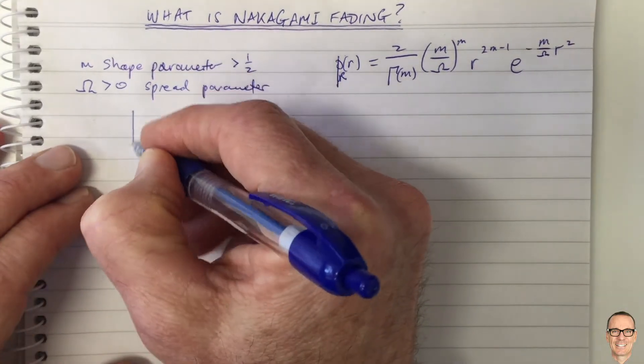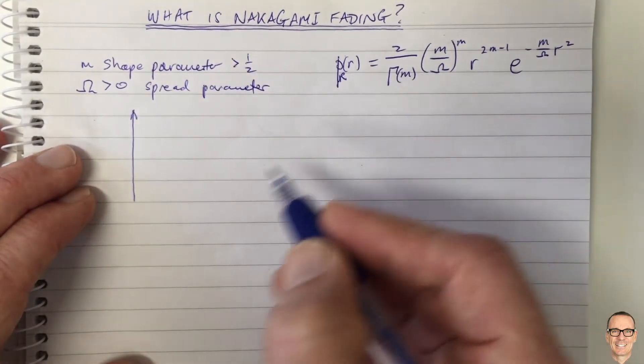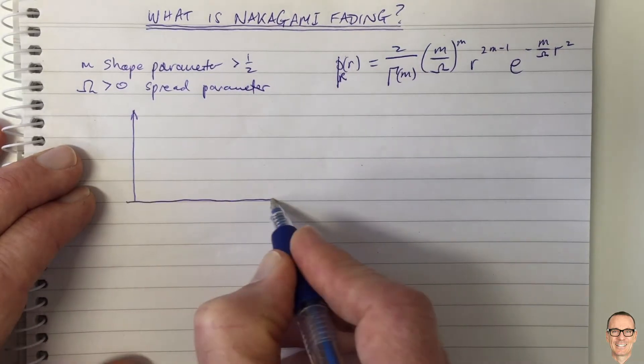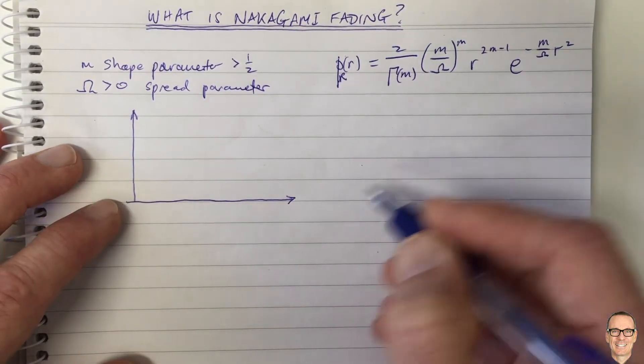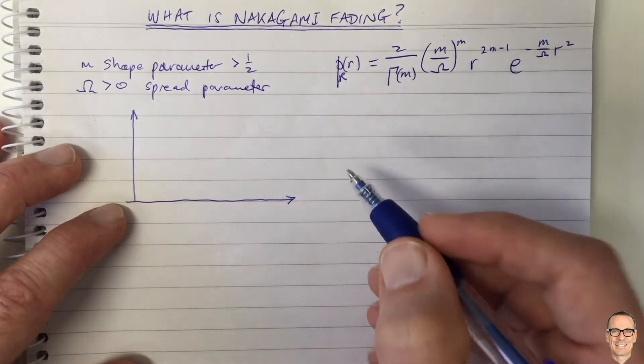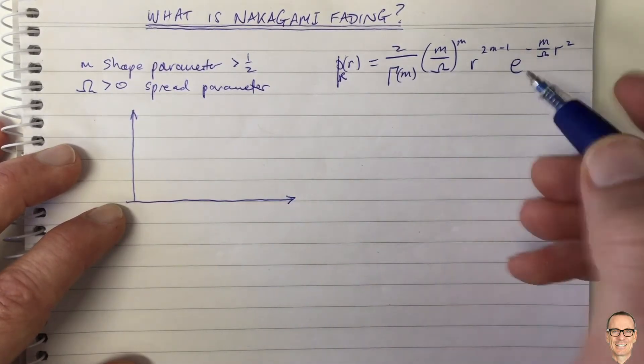So let's look at what the curves look like for different values of these shape parameters, and then I'll try briefly to compare them to the other parameters, the other models.